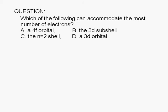Which of the following can accommodate the most number of electrons? A. A 4f orbital. B. The 3d subshell. C. The second shell. Or D. A 3d orbital.